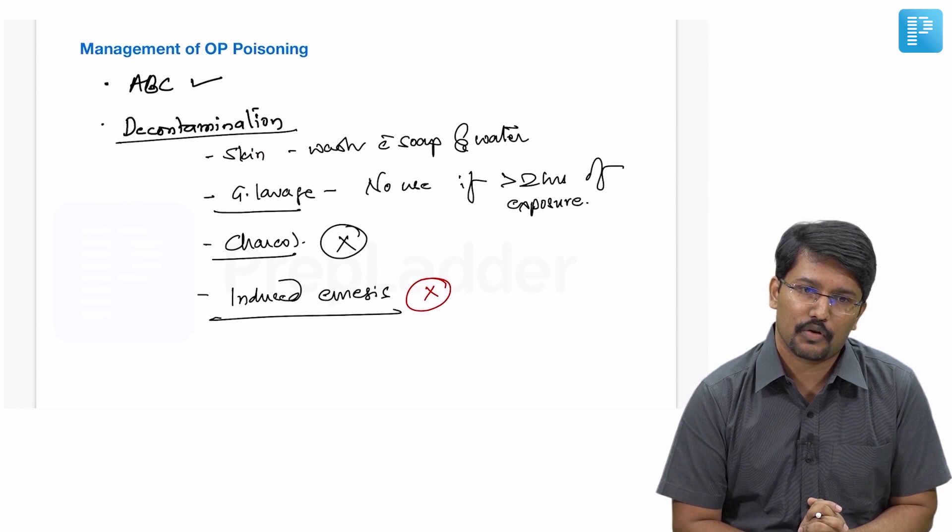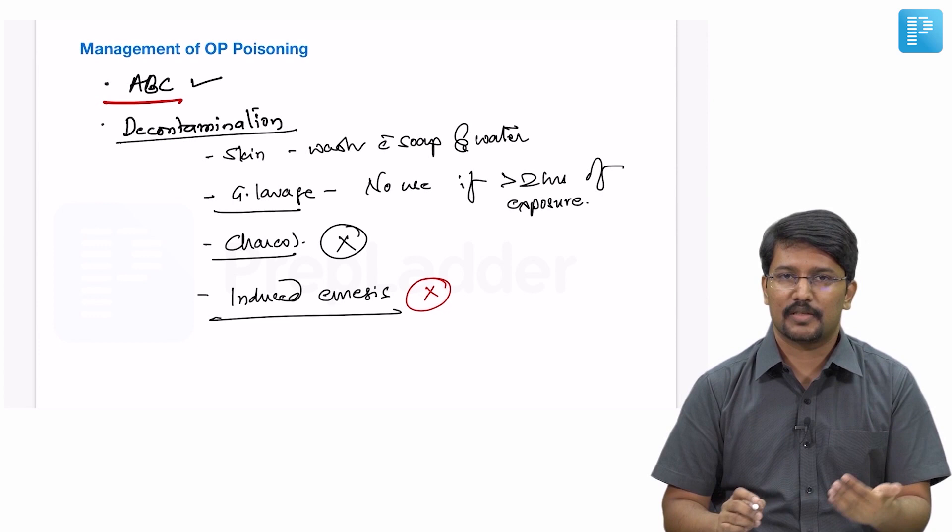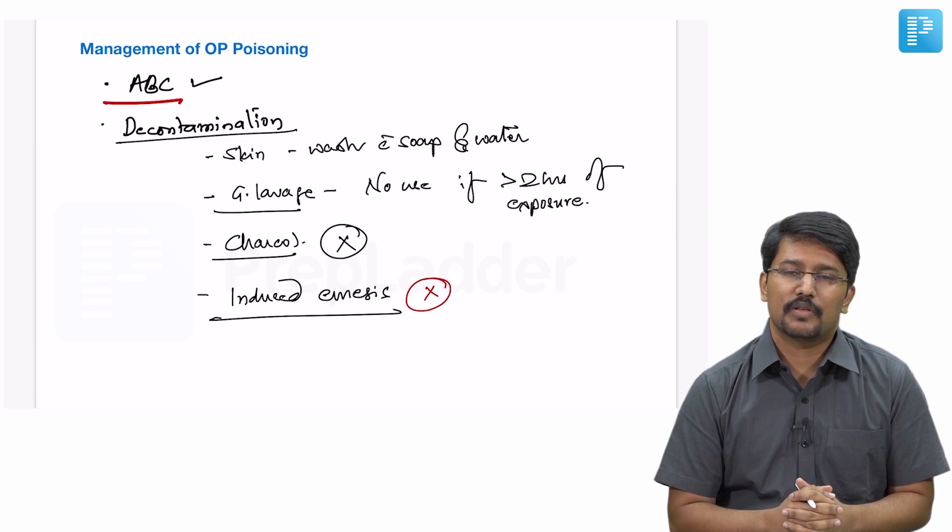Now let us discuss the management of organophosphate poisoning. Just like any other case of poisoning, ABC is important. So as soon as a patient is wheeled into hospital, airway, breathing, and circulation need to be attempted. Next comes the question of decontamination.